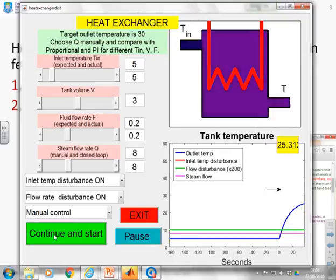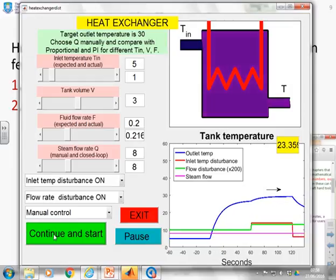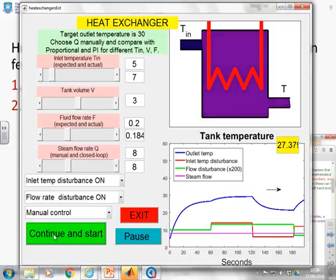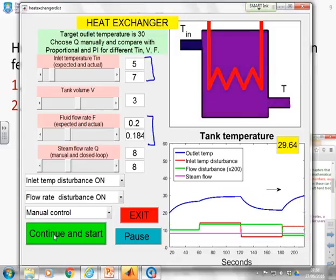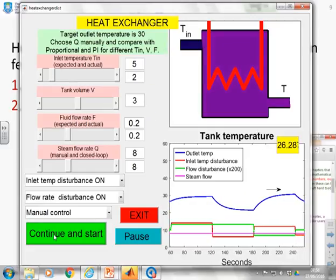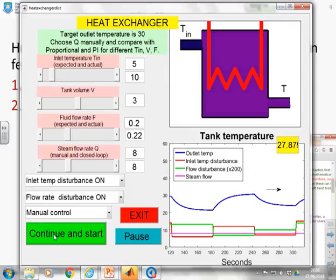Now you can see at the moment it's just got a simple step response because we started from a cold temperature. But now you'll notice the green and the red lines changing. Those are the inlet temperature perturbations and the fluid flow perturbations. If you look up here you'll see there's some values are different and those are telling you the difference between the expected and the actual value. That's linked to these green and red curves.